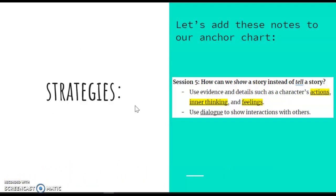Now that we've looked at some examples of show don't tell writing, let's go ahead and open up to our anchor chart titled How to Write Compelling Fiction and let's add these notes into our anchor chart. Session five. How can we show a story instead of tell a story? Well, we can use evidence and details such as a character's actions, inner thinking, and feelings. We can also use dialogue to show interactions with others. We also know that we can use sensory details such as sight, sound, smell, taste, touch. And we can also use our five W's and our H, our who, what, when, where, why, and how in order to add more details into our writing. Go ahead and pause the video here to add these notes into your chart.